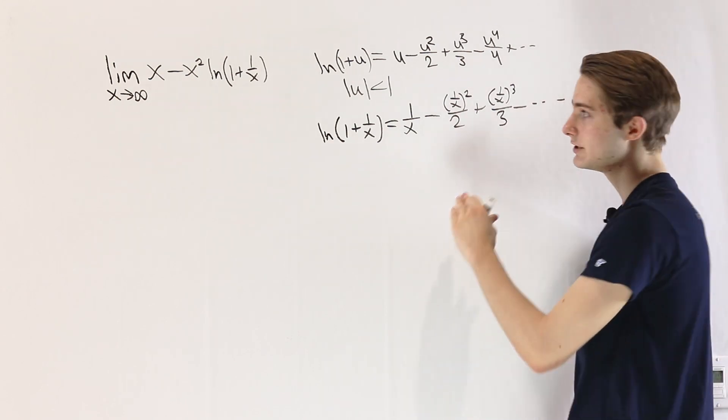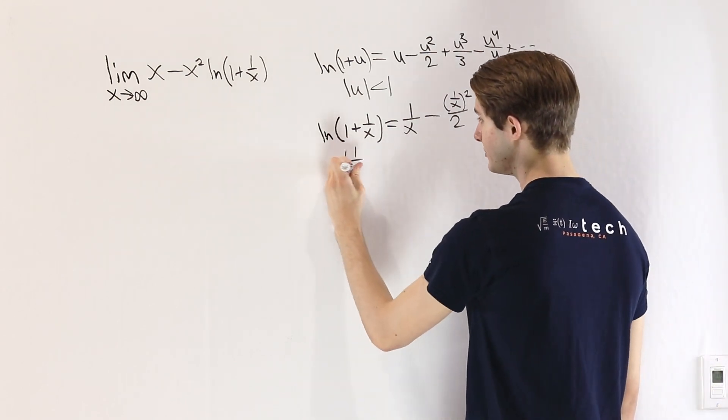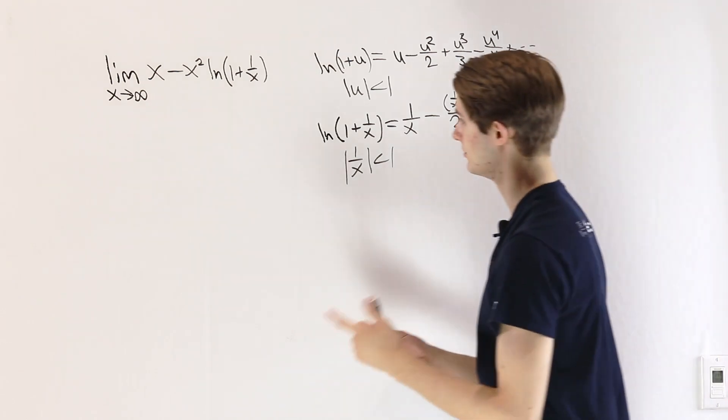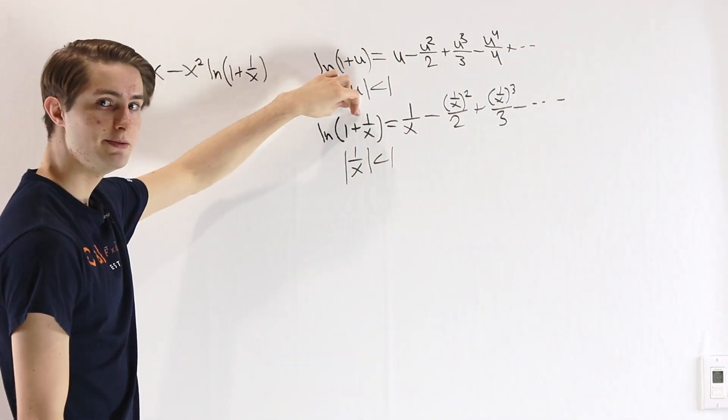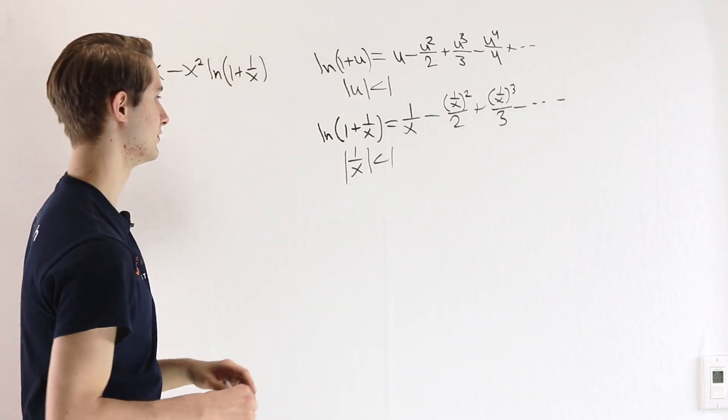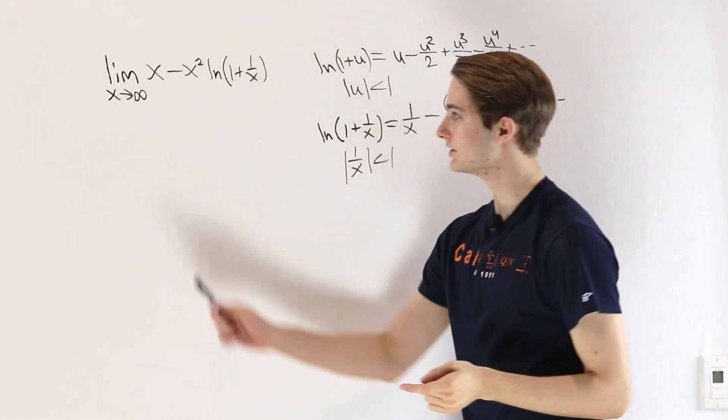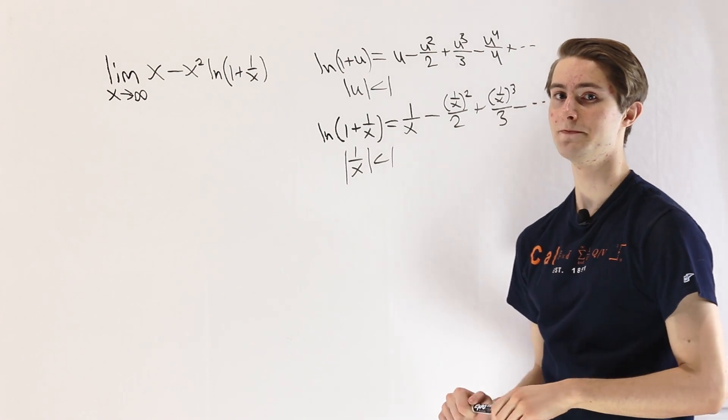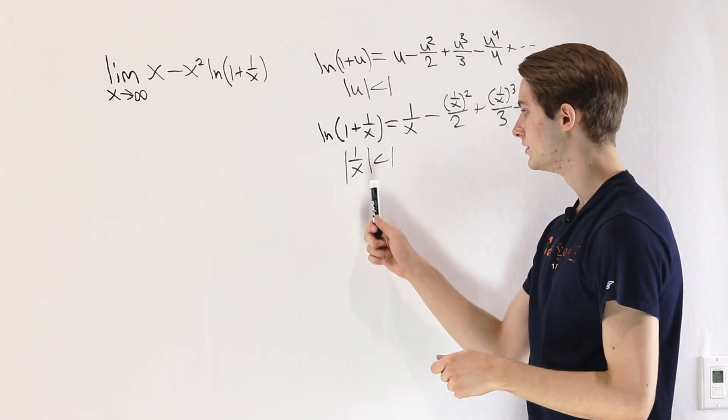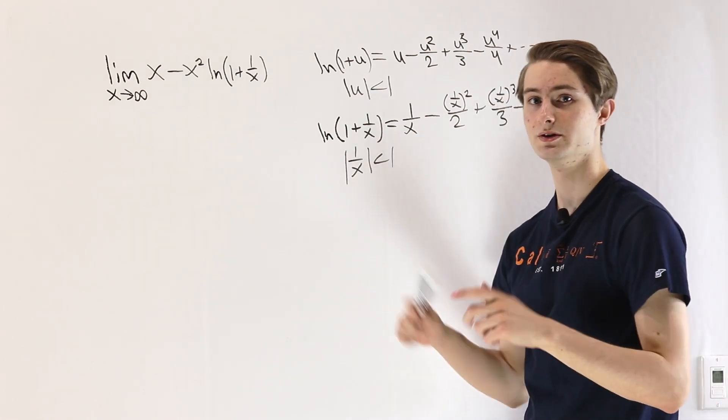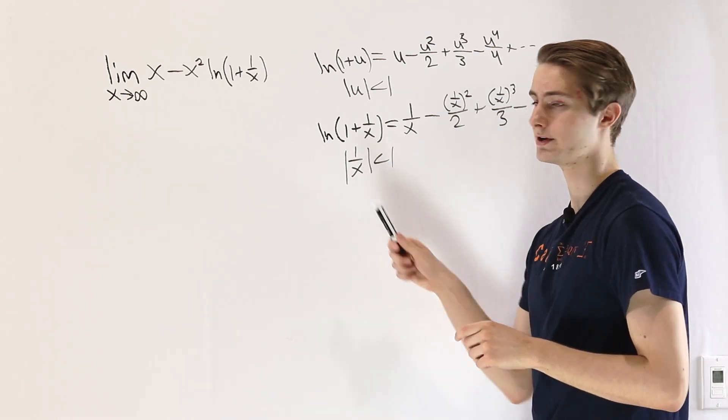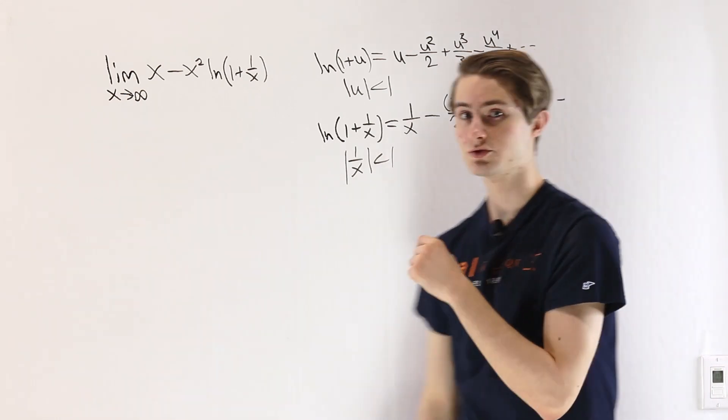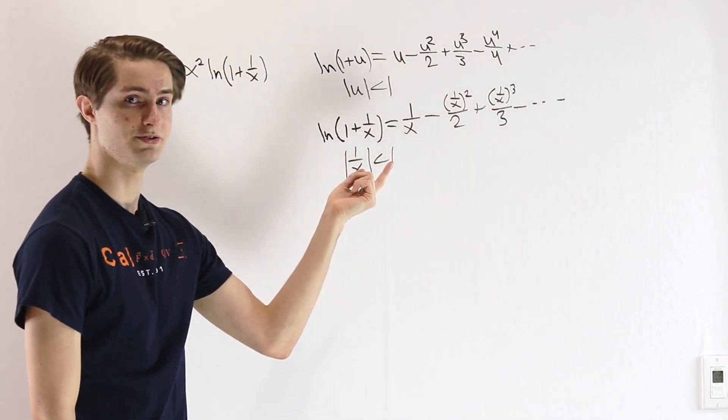And this is going to be defined for the absolute value of 1 over x is less than 1. The first thing we have to consider is, does our input fit inside the radius of convergence? Well, remember that we're taking the limit as x approaches infinity, and as x approaches infinity, 1 over x is going to go to 0. 0 is definitely less than 1, so we are inside of our radius of convergence, which means we're allowed to use this Taylor series expansion.